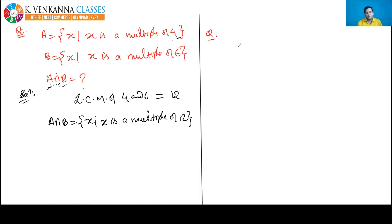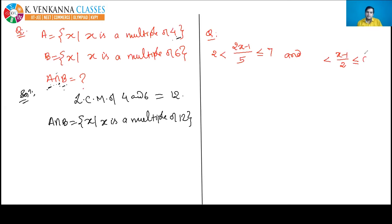Next question: (2x - 1)/5 lies between 2 and 7, AND (x - 1)/2 lies between 1 and 6. Write the value of x in interval notation — and here 'and' means intersection.